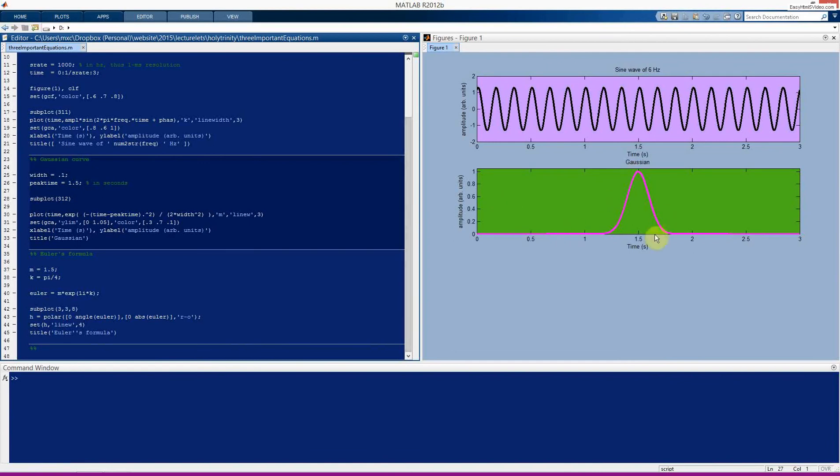So here's our Gaussian. You can see now it is peaking at 1.5 seconds. Here's the MATLAB implementation of the Gaussian function. So the natural exponent e to the something is implemented in MATLAB as exp, the function exp. And then the input would be the exponent.